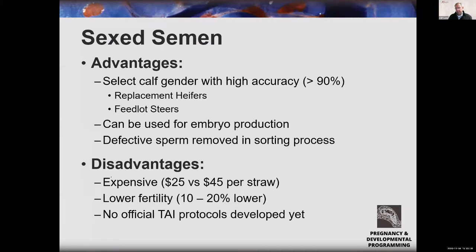Some disadvantages are expense — sexed semen can be more expensive than conventional semen. It tends to have lower fertility, somewhere in the range of 10 to 20% lower than conventional semen. There are no official timed AI protocols — using sexed semen in a cow without an observed heat has no recommendations from the reproduction task force at this point, though I'll talk about some opportunities we are developing.